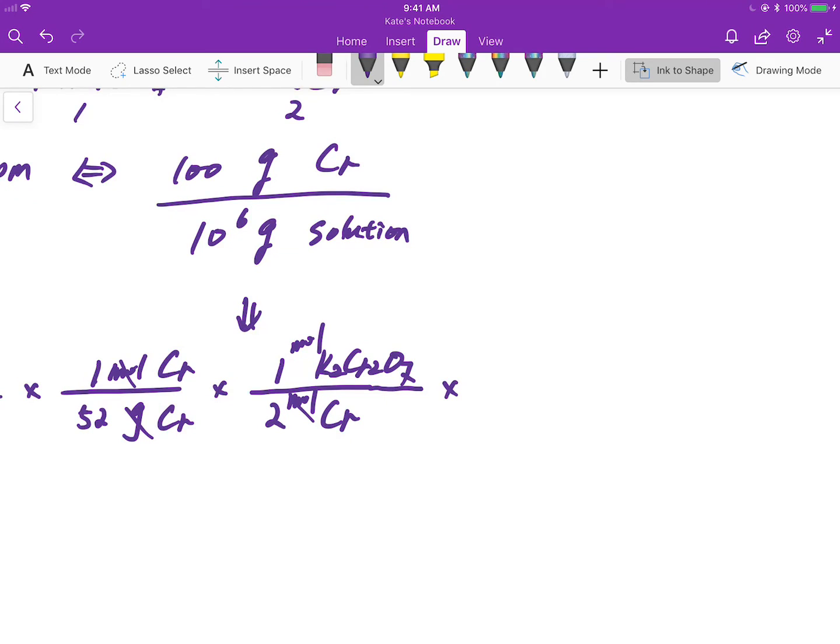So we can convert moles to grams by molar mass. Every mole of potassium dichromate is 294.185 grams.